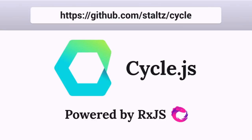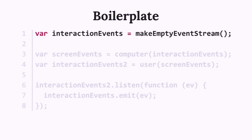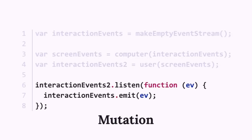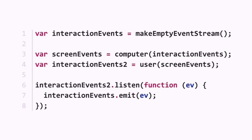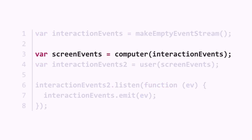This is roughly what my framework called cycle.js does. You can find it at that address up there. The event stream library it uses is RxJS, a reactive library. What cycle.js does is basically solve some problems with the code we wrote. First of all, this is boilerplate — we don't want to write that in every app. This is mutation and also boilerplate. We have two event streams to represent the same thing — one is the proxy and the other is the real one, attached to each other. If you strip away all of that mess, you just want to care about specifying as a programmer how the computer works in this user interface. That's what cycle allows you to do — just specify one function, and it does the rest of the loop for you.